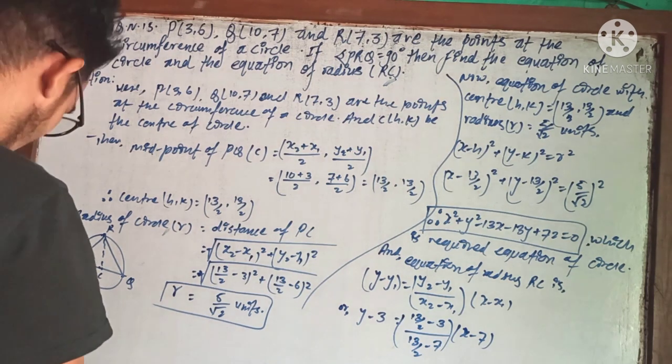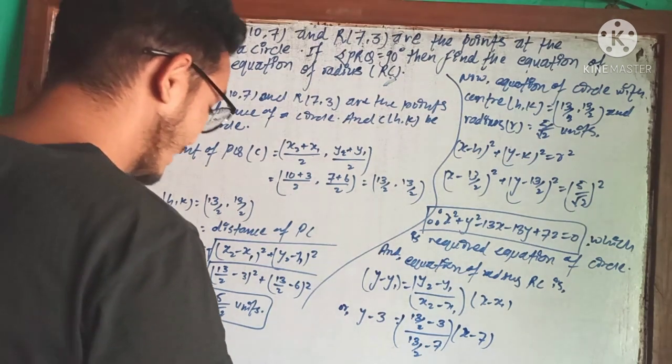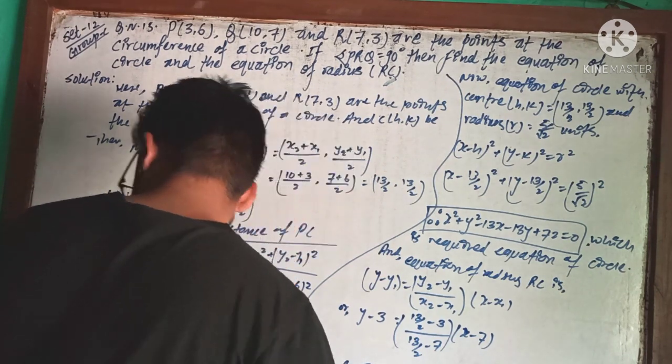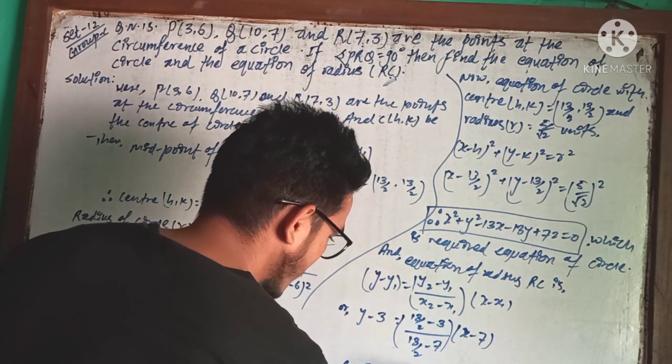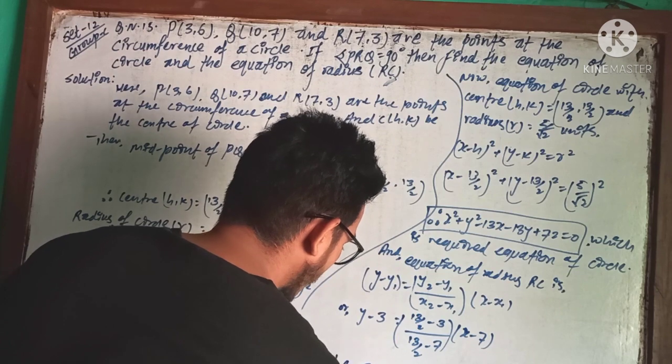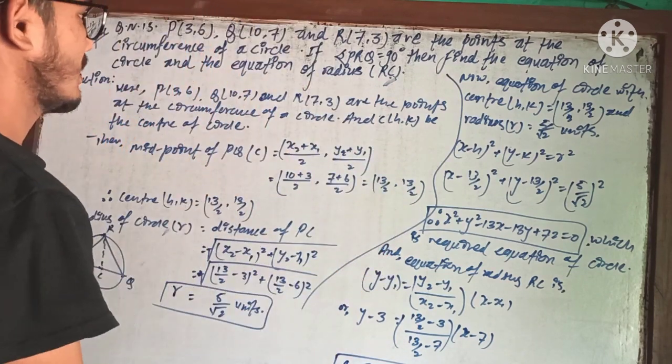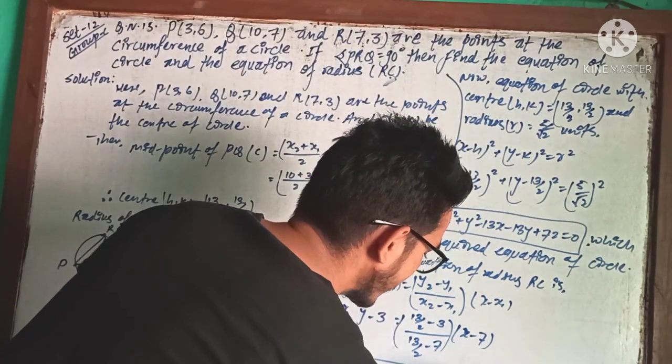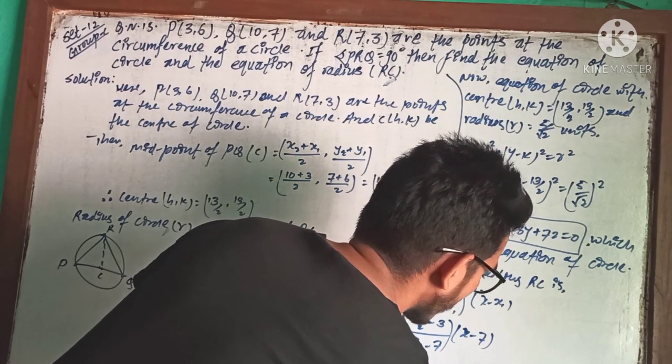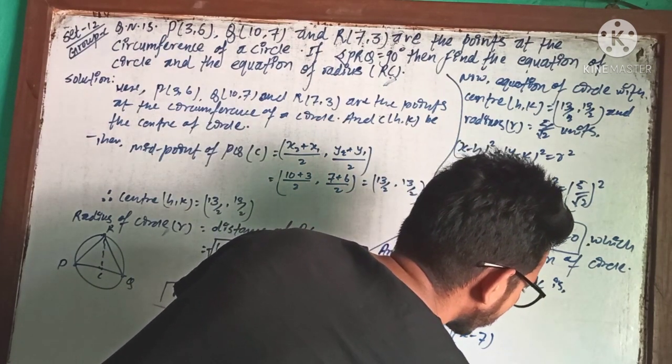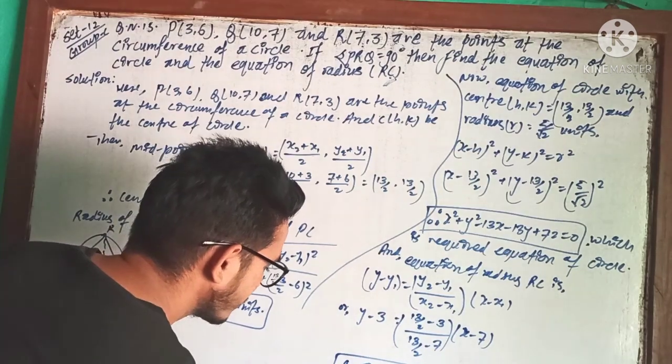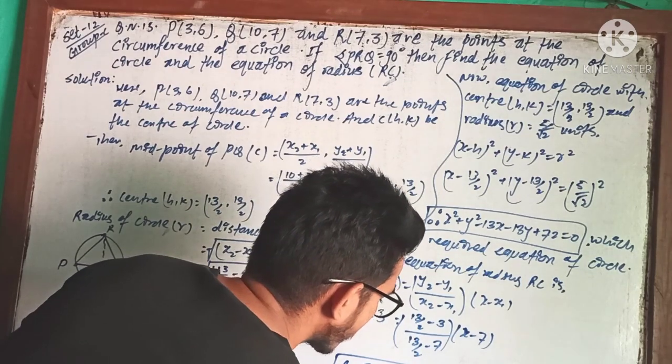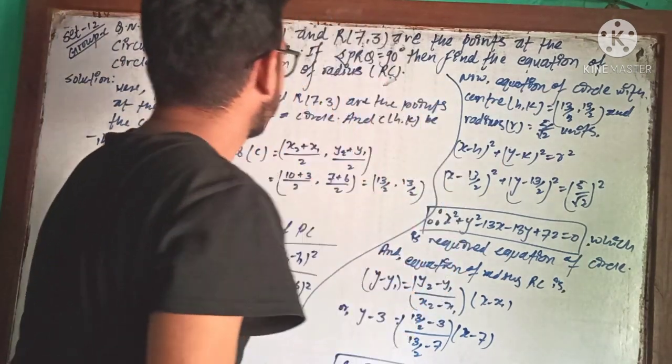Solving this equation, the result is 7x + y - 52 = 0. This is the required equation of radius RC. Thank you.